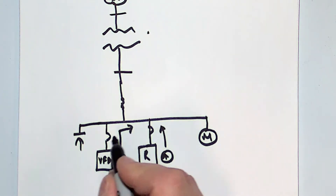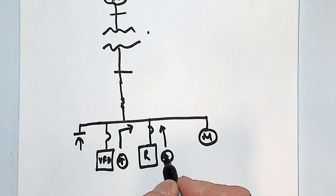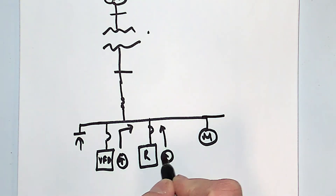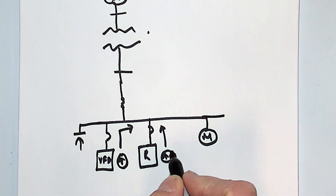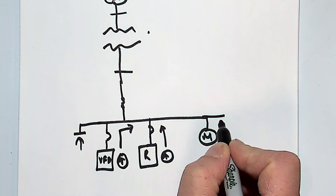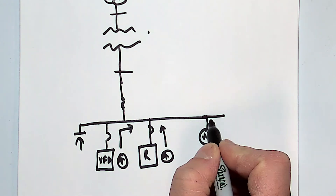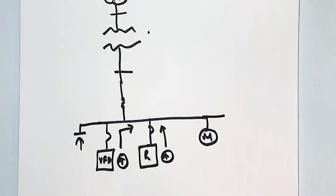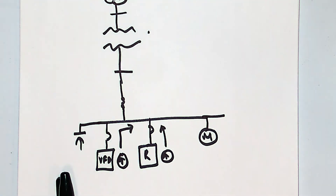It's a very simple system. What we do is we look for current distortion coming out of the drives or the loads, and we look for voltage distortion on the common buses that are going to affect the power system and perhaps put us over the limits of IEEE 519.